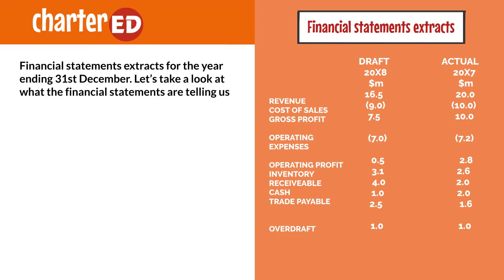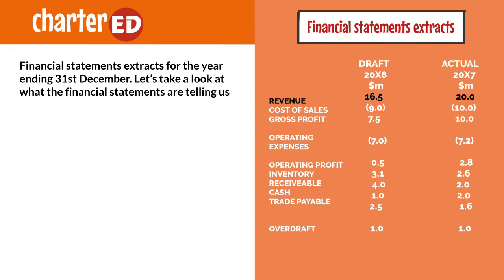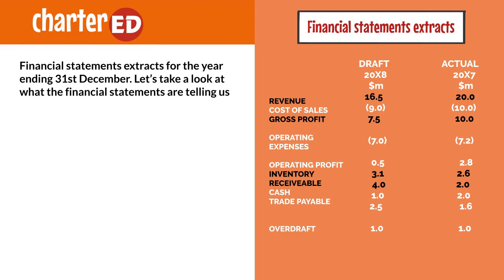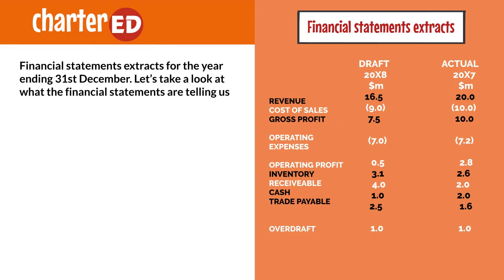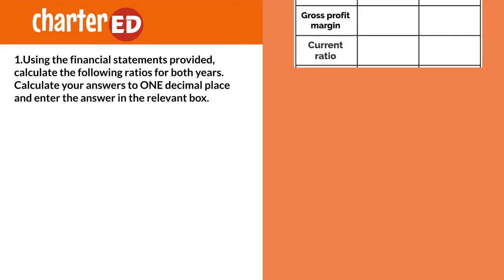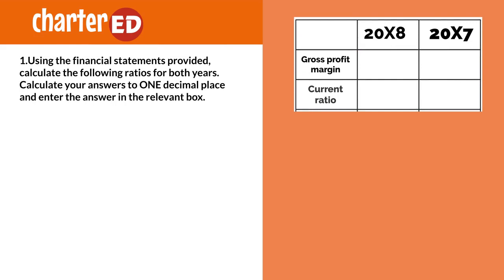Looking at the financial statement extracts for the year ending 31st December, revenue has been reduced as expected. Profits have also been significantly reduced. The inventory balances are getting bigger and so are the receivables. Cash has reduced significantly and trade payables have increased by a margin. Let's go to the first question.